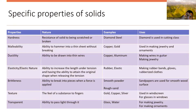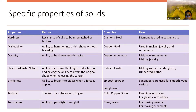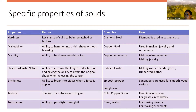Examples of brittleness are smooth powder and rough sand. The uses — sand is used for smoothing wood surfaces.